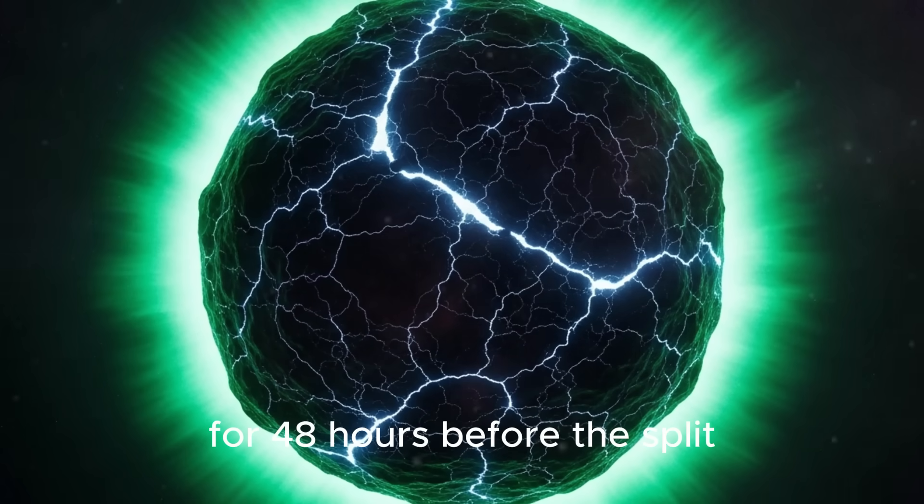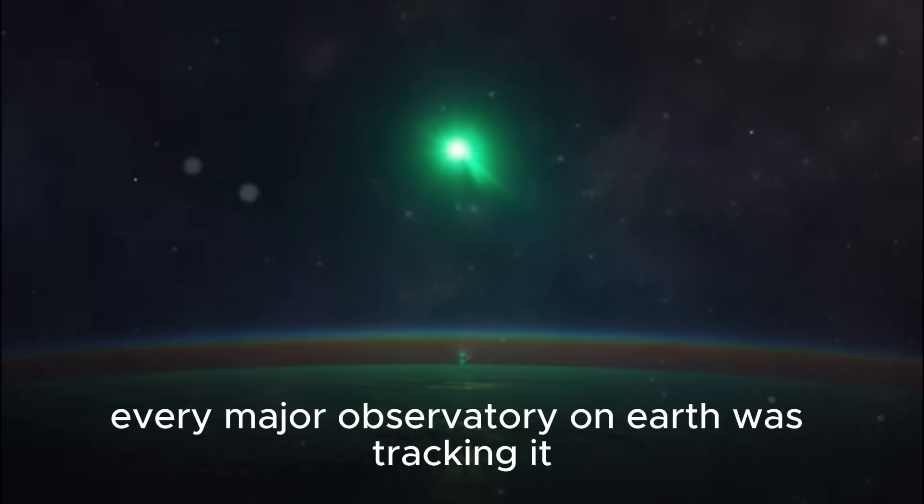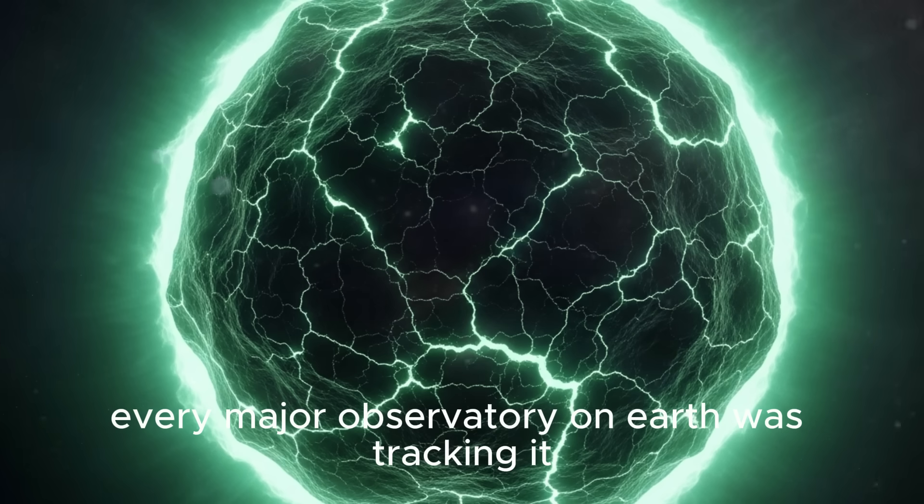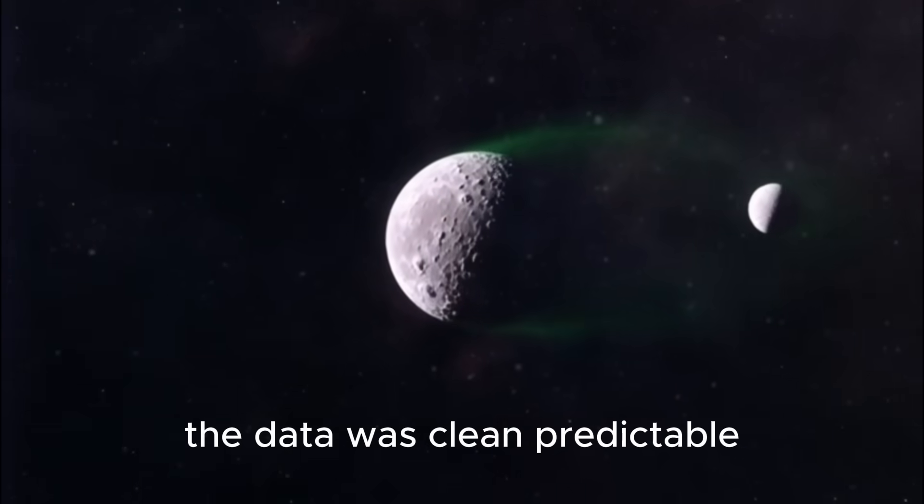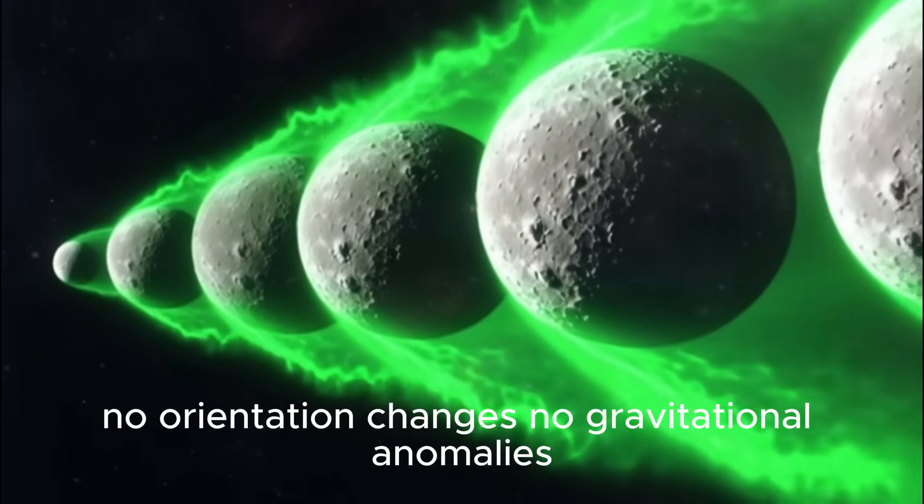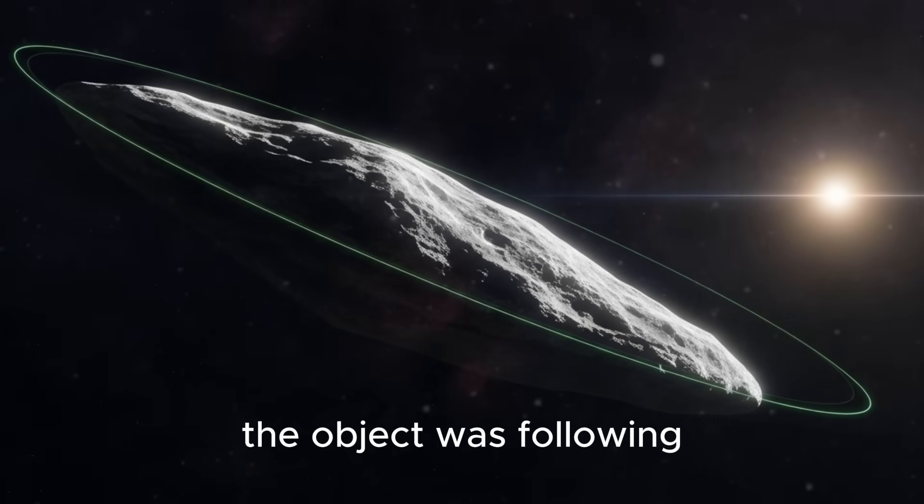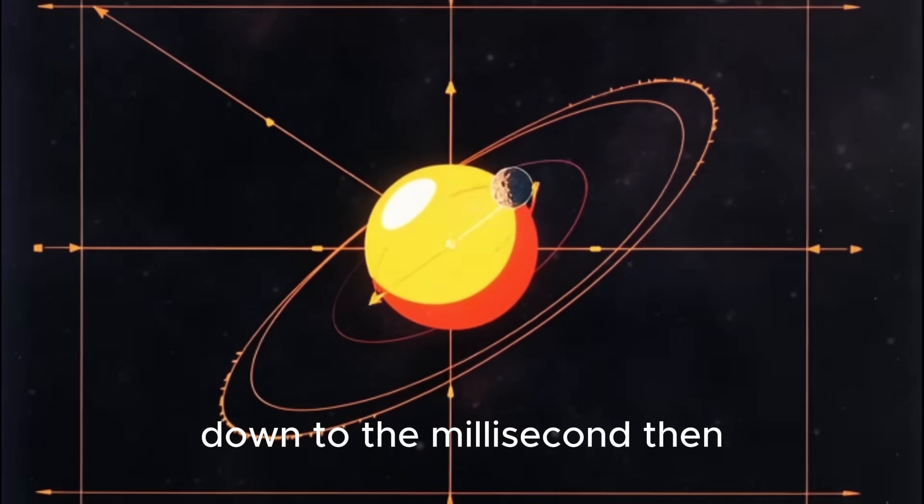For 48 hours before the split, 3I/ATLAS maintained a perfectly stable orbit. Every major observatory on Earth was tracking it - NASA, ESA, observatories in Chile, Hawaii, Japan. The data was clean, predictable. No unusual velocity fluctuations, no orientation changes, no gravitational anomalies.